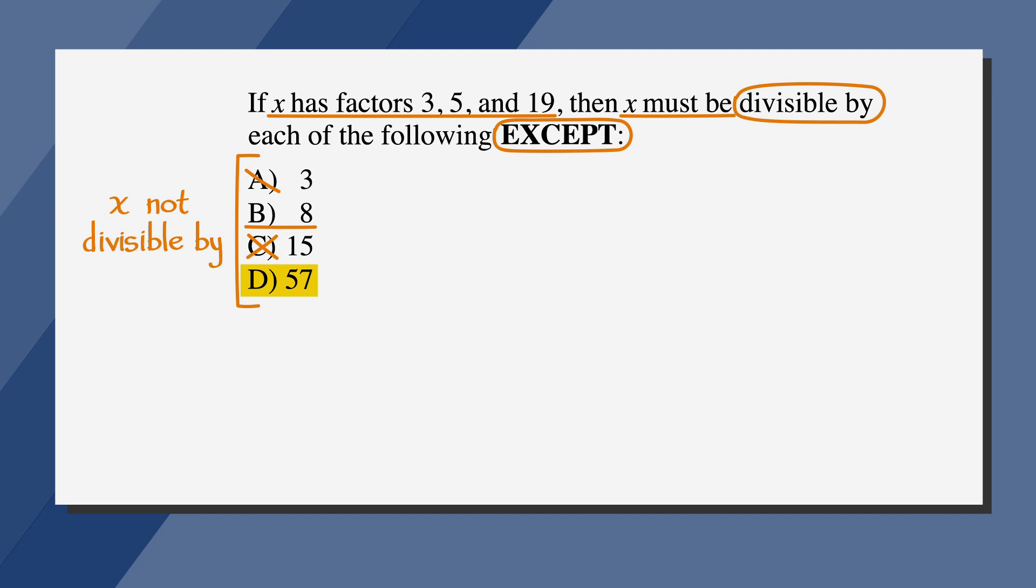Finally, let's look at answer choice D. We can do long division here, but let's look for an easier way. We know 3 times 5 times 19 equals 285. 3 times 19 equals 57. So 285 is divisible by 57, and answer choice D is incorrect.